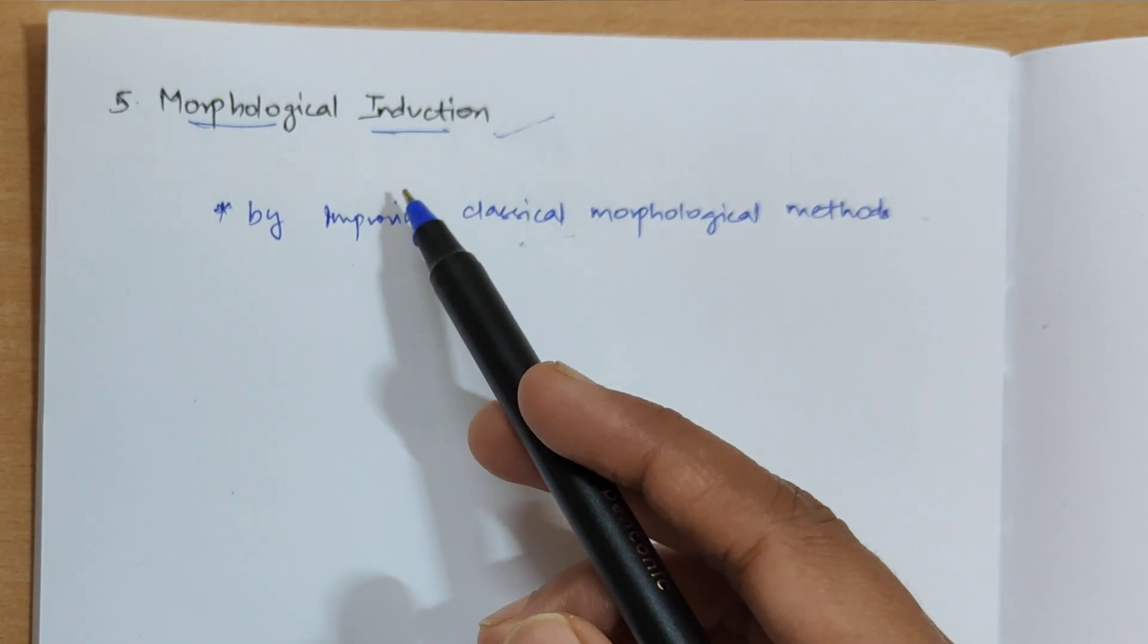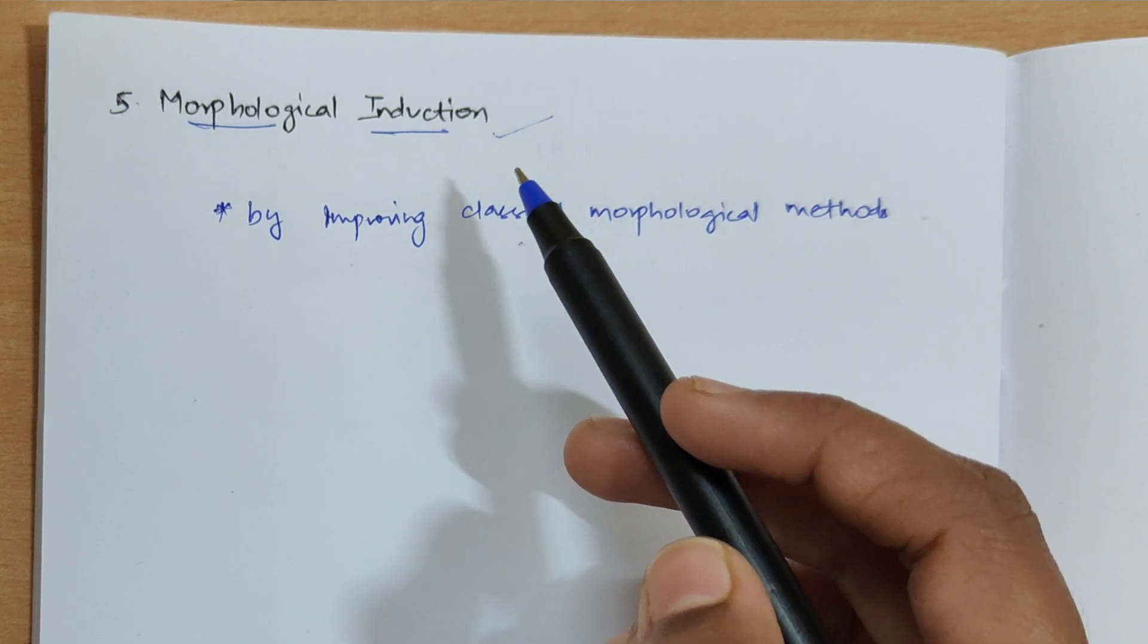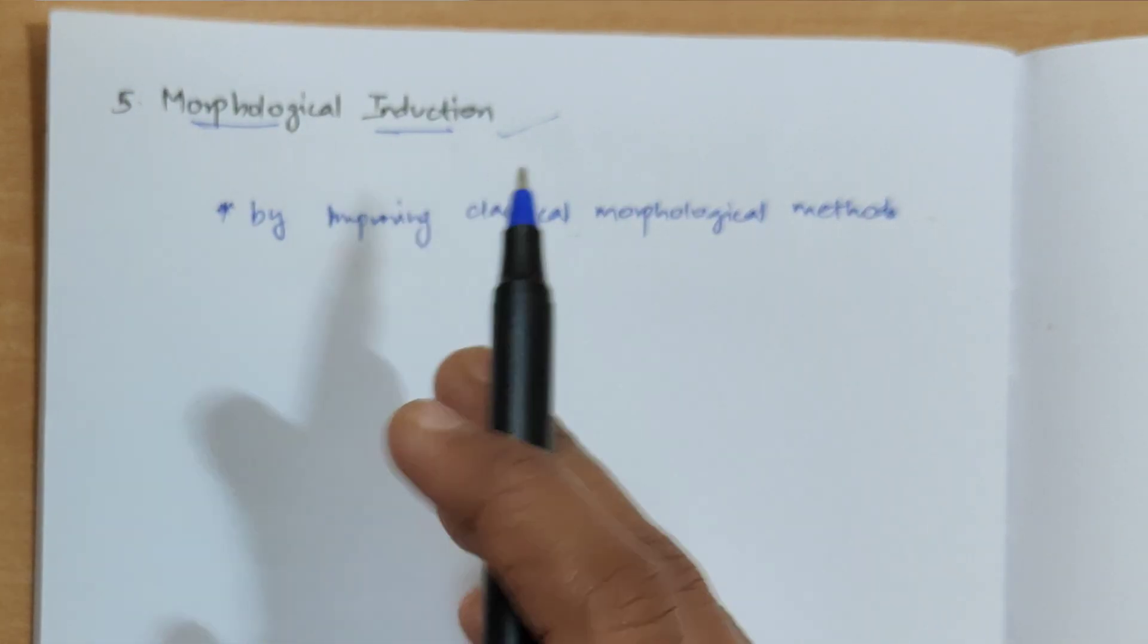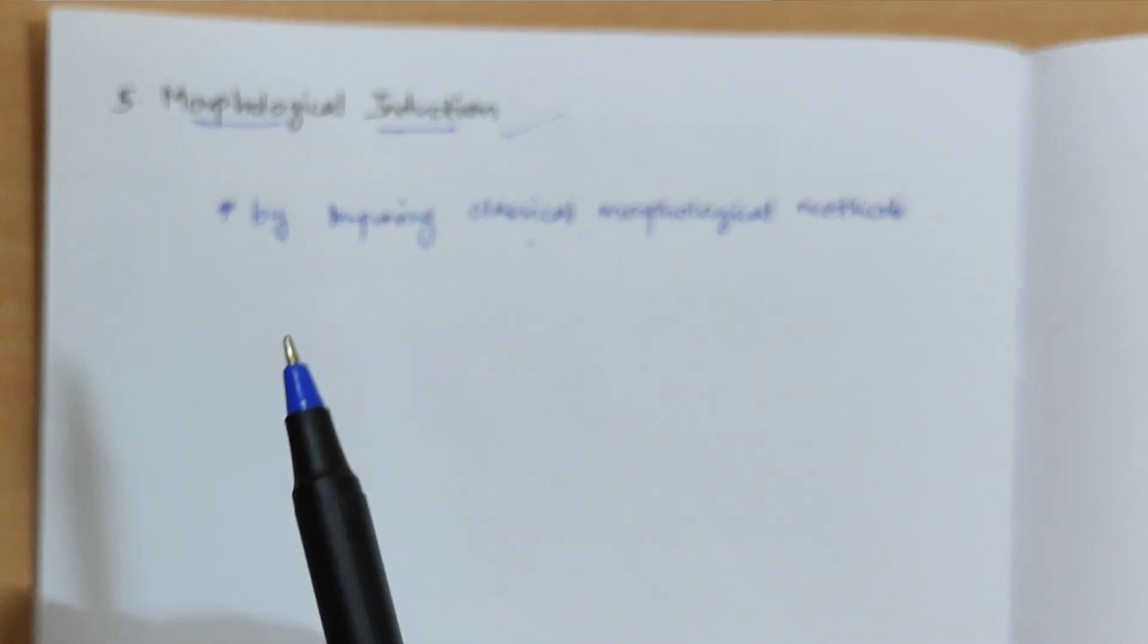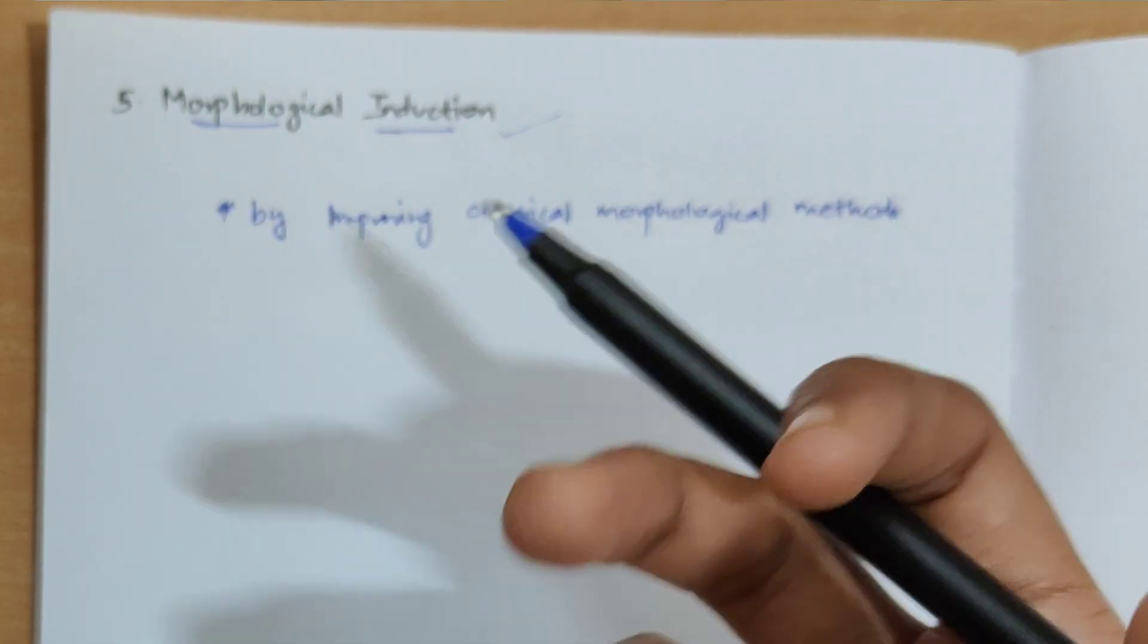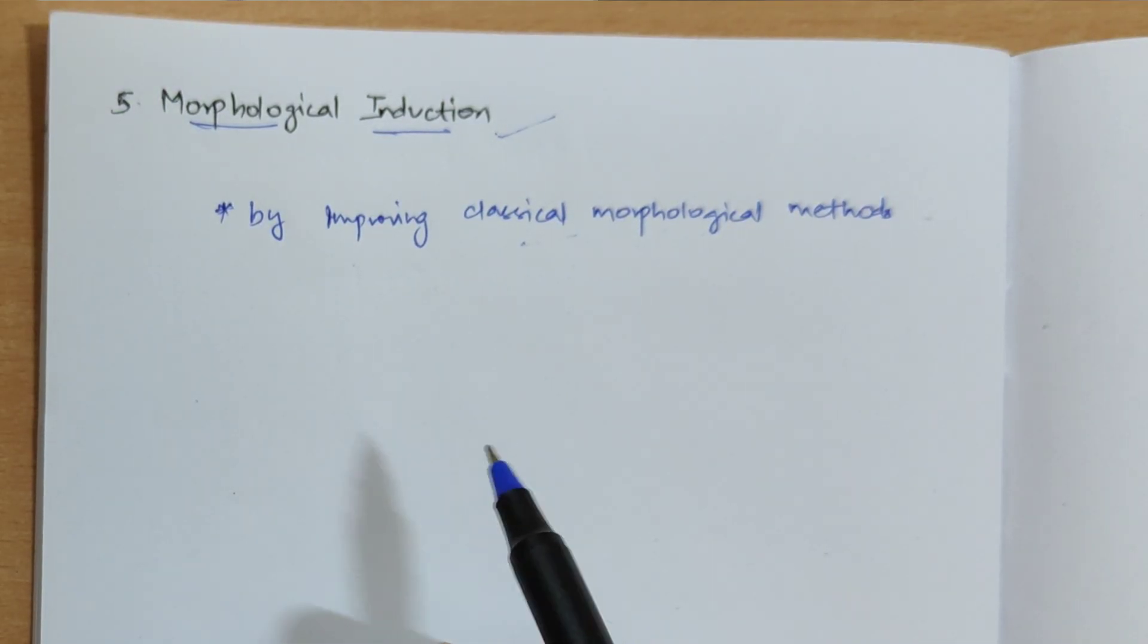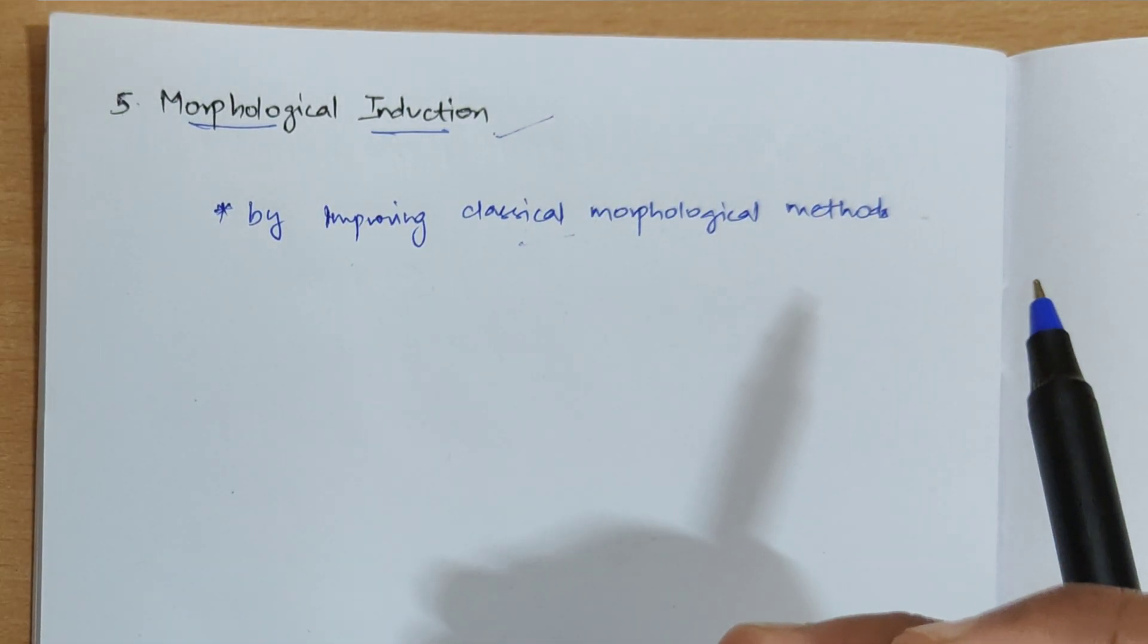Now the fifth morphological model is morphological induction. So what is this morphological induction and how it is useful? First thing, it is used to discover the patterns of a particular word or the structure of a particular word, and how actually the words are formed. All those things can be discovered without any help of human being. The system only automatically detects the word structure and patterns.